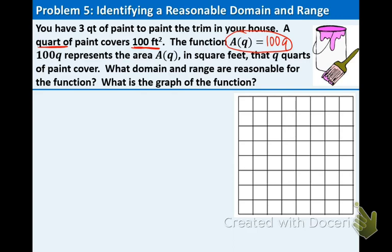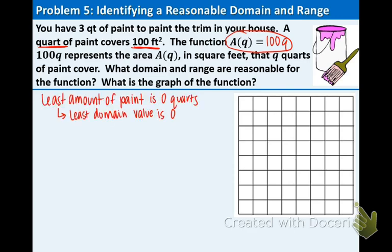Think about it for a second. The least amount of paint that we can use is 0 quarts. So that means our smallest domain value is going to be 0. And our most amount of paint that we can use is 3 quarts because we have no more than 3 quarts. That's what we're given. So our greatest domain value is going to be 3. And we can use any value between 0 and 3.